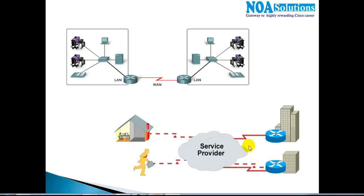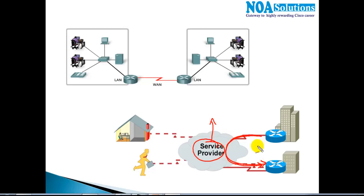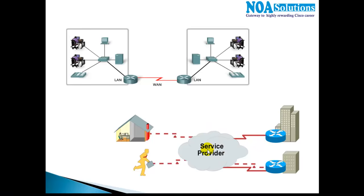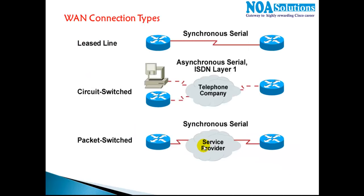To make that possible, we need to contact the service provider — a local or any service provider who can provide the connectivity. The cable required to connect between your branch offices has to be provided by the service provider, because you cannot lay your own cable from one location to another. You need to take a line from the service provider.